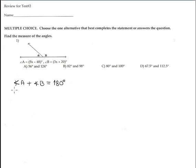The expression for angle A is 5X minus 48 degrees, plus the expression for B is 3X plus 20 degrees. It's equal to 180 degrees.